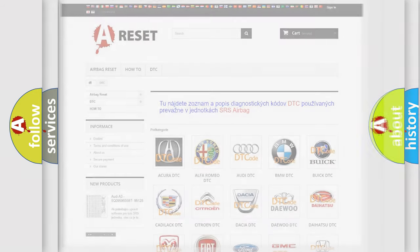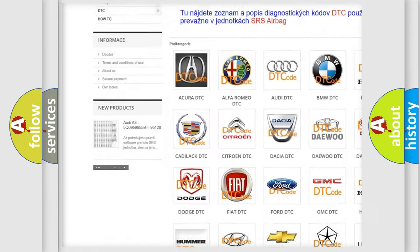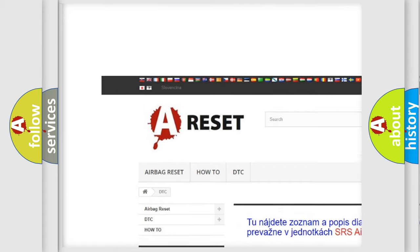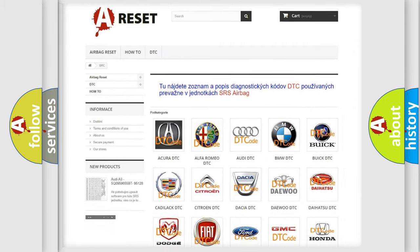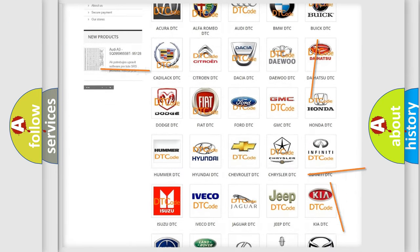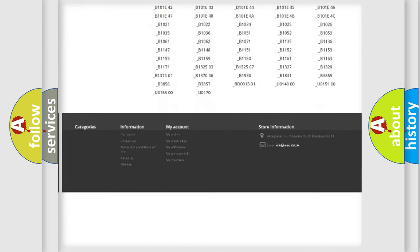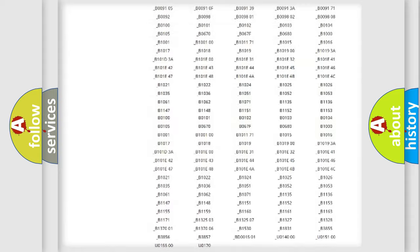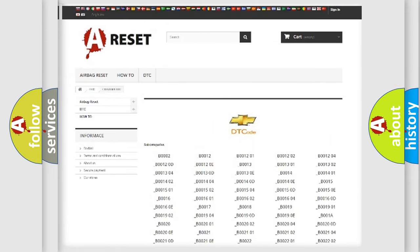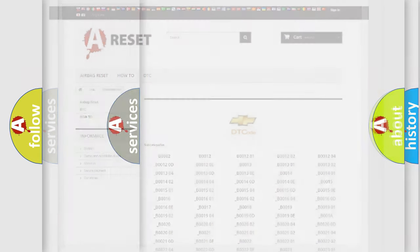Our website airbagreset.sk produces useful videos for you. You do not have to go through the OBD2 protocol anymore to know how to troubleshoot any car breakdown. You will find all the diagnostic codes that can be diagnosed in Chevrolet vehicles, and also many other useful things.